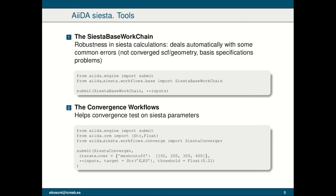A second tool we have is the convergence workflow. Every time we start the study of a new system, it is always good to test the reliability of the parameters we are using by making convergence tests. We have the SiestaConverger, which is a work chain submitted like any other work chain in AiiDA. It takes all the SIESTA inputs as shown before, plus an 'iterate_over' dictionary that contains the quantity we want to vary and the values we want to test, and a target quantity — such as the Kohn-Sham energy — along with a threshold to decide whether convergence is reached.